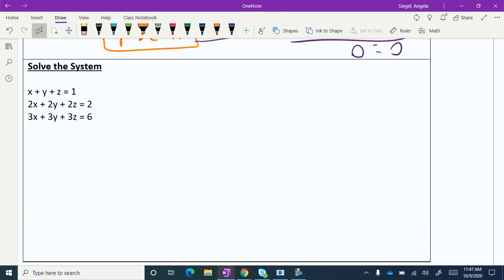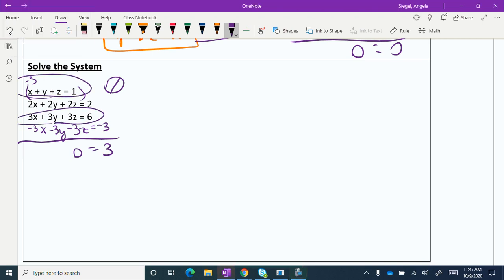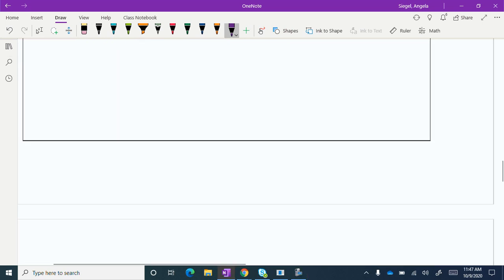This one, I'm going to tell you, is another no solution. See if you can go ahead and see if you can get that. I just happened to multiply this by negative 3. And I just brought it down here. And I ended up with 0 equals 3. So that is another no solution.